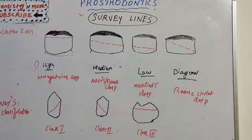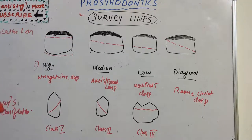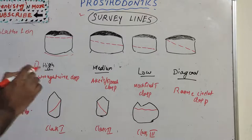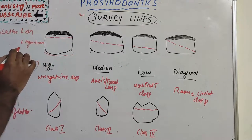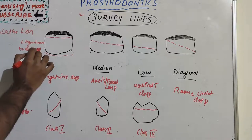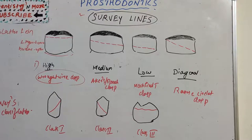The high survey line results from the abnormal inclination of teeth — when there is a tilted or abnormally inclined tooth, we need a high survey line. It is mostly found on the lingual surface of lower teeth and the buccal surface of upper teeth. For a high survey line, we use a rod wire clasp.